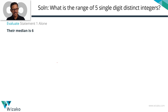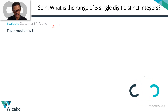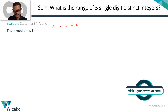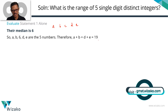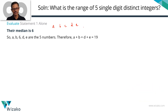Statement 1 says their median is 6. With numbers in ascending order a, b, c, d, e, the middle number is the median, so c = 6. Substituting into a + b + c + d + e = 25, we get a + b + d + e = 19. Also, d and e must be greater than 6, and a and b must be less than 6.